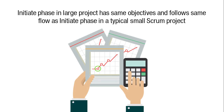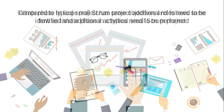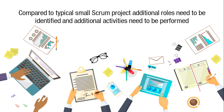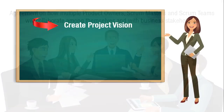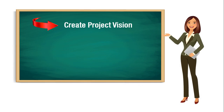The first phase we will learn is Initiate. The Initiate phase in a large project has the same objectives and follows the same flow as the Initiate phase in a typical small Scrum project. Compared to a typical small Scrum project, additional roles need to be identified and additional activities need to be performed to achieve an agreement on how the multiple product owners, Scrum masters, and Scrum teams will collaborate among themselves and with the business stakeholders. The first process is Create Project Vision.